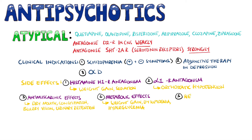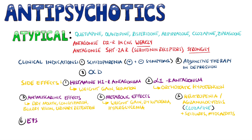Clozapine in particular has a risk of neutropenia or agranulocytosis, so frequent blood tests are required. Clozapine also decreases the seizure threshold and has a risk of myocarditis. Extrapyramidal side effects are way less common in atypical antipsychotics, but are still possible, just like neuroleptic malignant syndrome. They also have a risk of torsades arrhythmia.